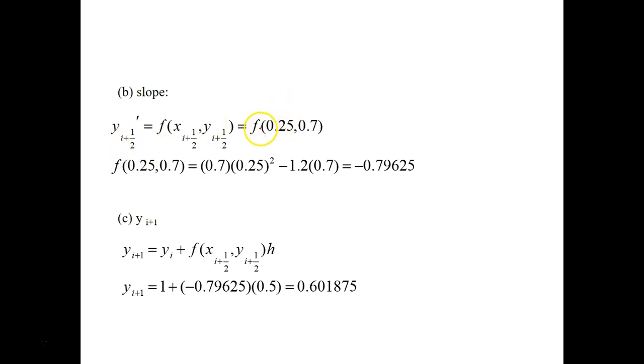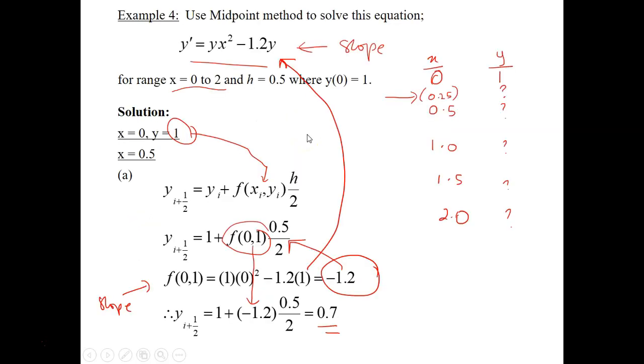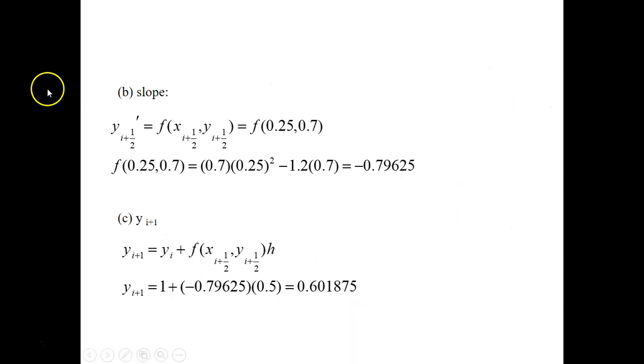Now that you got the value of y_(i+1/2)—you have identified your midpoint interval is 0.25 and 0.7 here—you need to calculate the slope at this point. The slope at this point: just substitute 0.25 and 0.7 back into that derivative formula. So you get the slope for this midpoint. Then you need to use this midpoint slope to calculate the value for your y_(i+1).